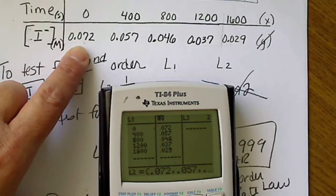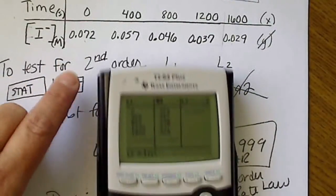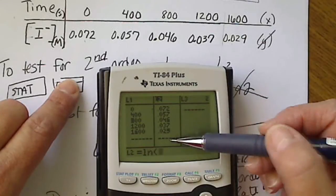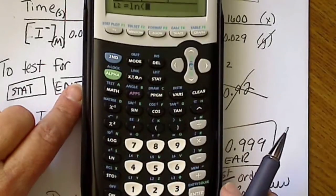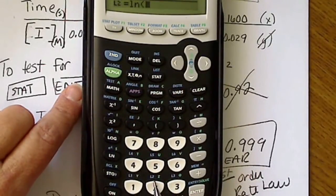If I take the natural log, and then I have to tell it to take the natural log of my L2 list. So I do that by just pushing this key here that says L2. If I do that, that takes the natural log of all those values at once.